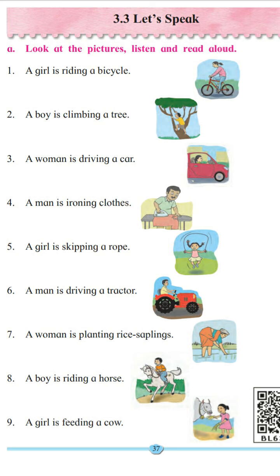Number 5. A girl is skipping a rope. What is the girl playing with? She is doing skipping. So skipping is an action, that means the verb is skipping.